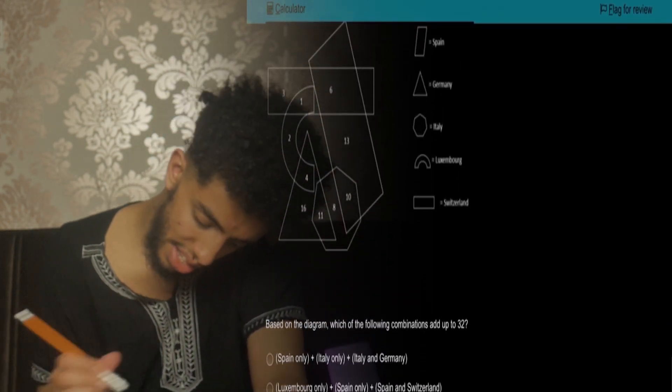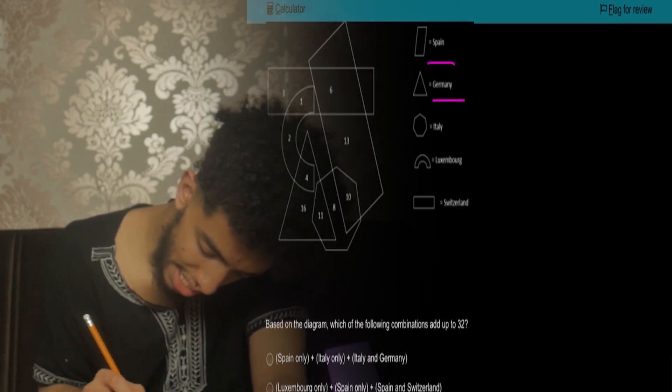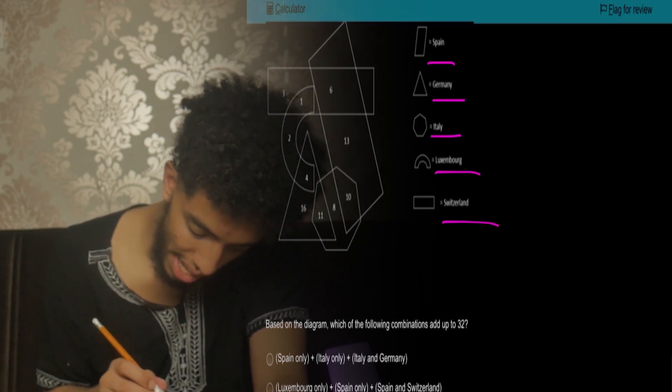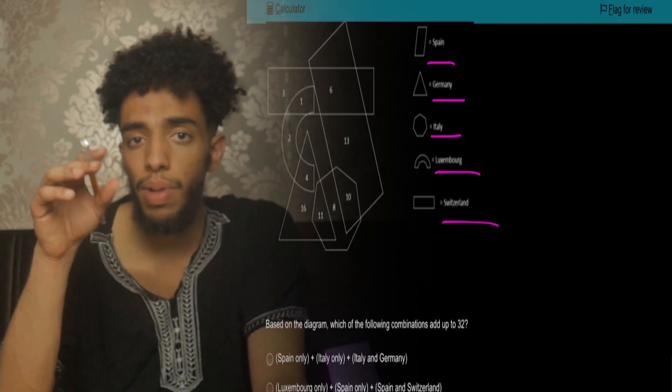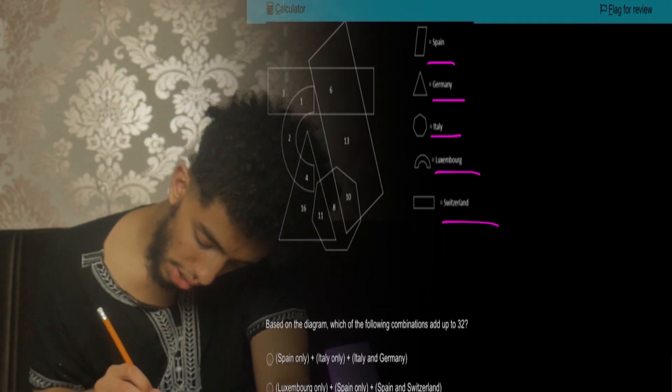Okay, so now you can see the diagram there, and it says Spain, Germany, Italy, Luxembourg, Switzerland. Any intersections or any regions in which a number lies between two shapes is the intersecting region.